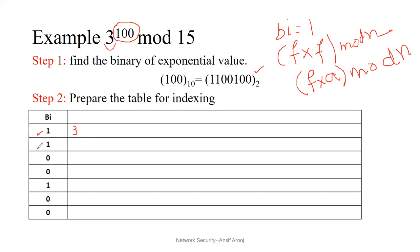Now the next digit is 1, so we have to do two steps. One is f into f, which means we take the previous index value and multiply it with itself. So here we write 3 multiplied by 3 mod 15. 3 times 3 is 9, and 9 mod 15 is also 9. So we write 9 here — that completes one step of the two.